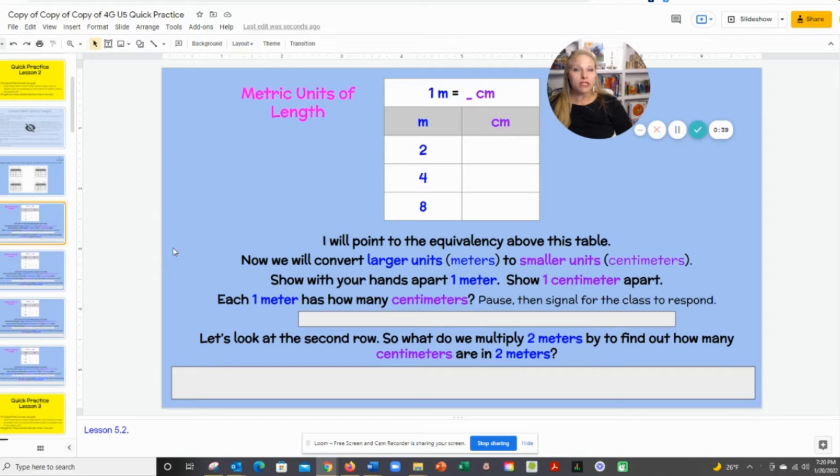It says I will point to the equivalency above this table. So the student leader can point up here and say we're going to convert larger units, meters, to smaller units, centimeters. Class, show with your hands one meter. The class should show their hands spread way far apart. We say a meter is very long. It is longer than a yardstick, about the length of my arms width. If I were to hold a guitar, that's about a meter.